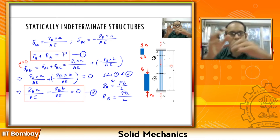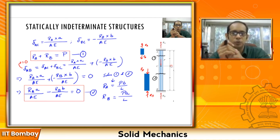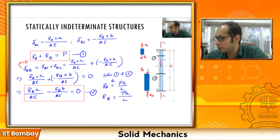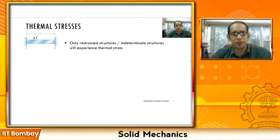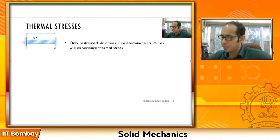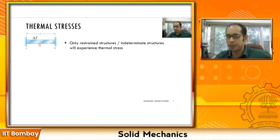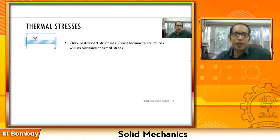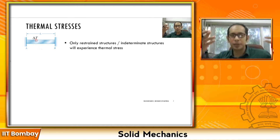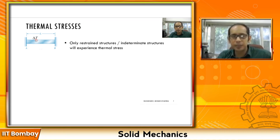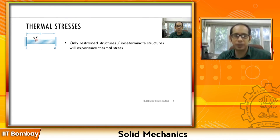Now that we have solved indeterminate structures, another type of indeterminate structure comes from thermal stresses. Here you have a bar clamped at point A and point B, and a temperature increase of delta T is applied. This is a classic example where you have no overall strain but you do have stresses. Since A and B are clamped, the bar cannot expand even though the temperature makes it want to; this generates internal stresses.